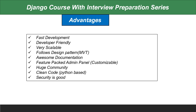The advantages of Django are huge. First, it is used for fast development. Second, it is very developer-friendly with a clean code architecture using the MVT pattern. It is highly scalable — you can add many features and functionalities. It follows a perfect design pattern, produces well-organized code, and has excellent documentation. It also has a feature-packed admin panel that you can customize — you can add, delete, and update products directly from it.